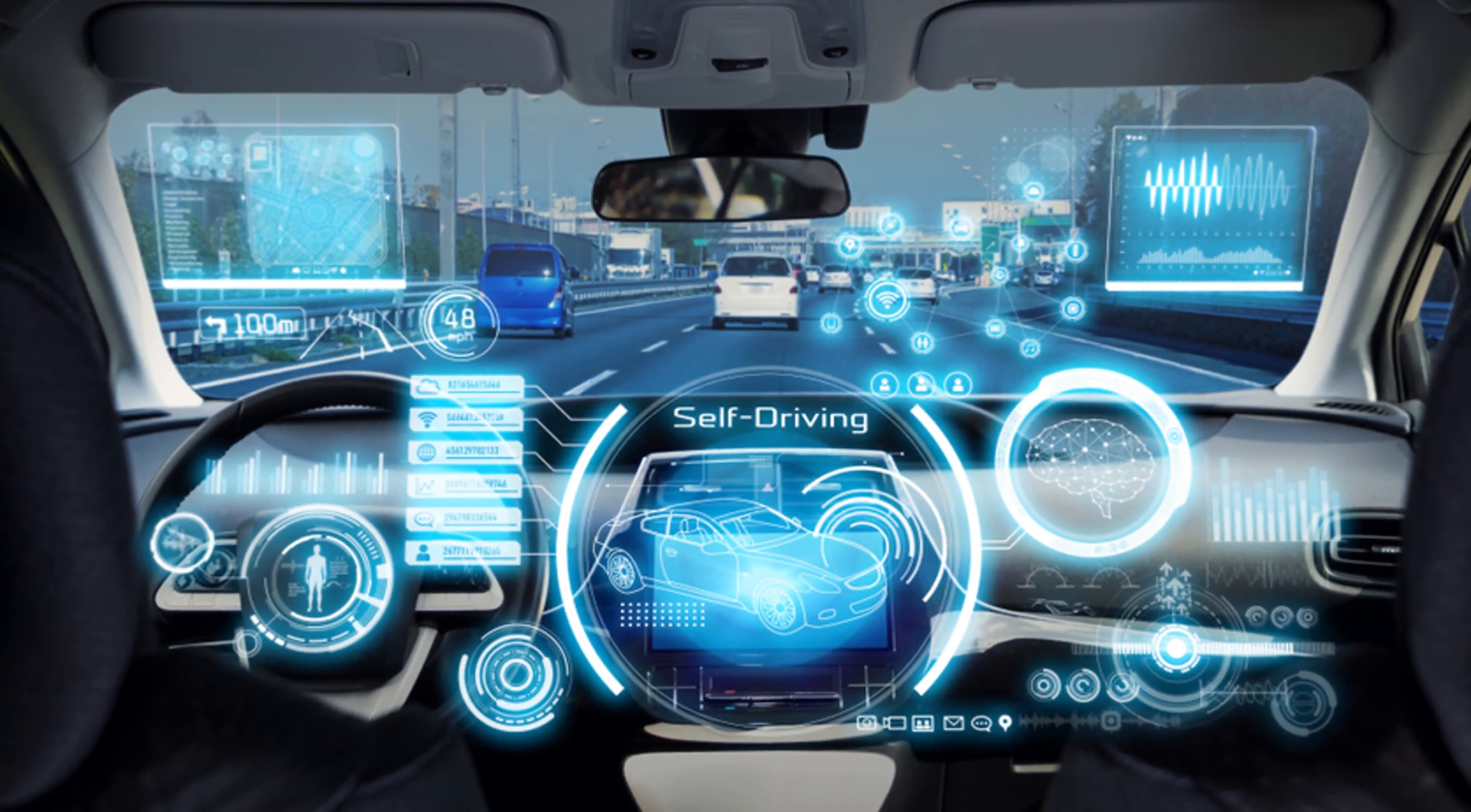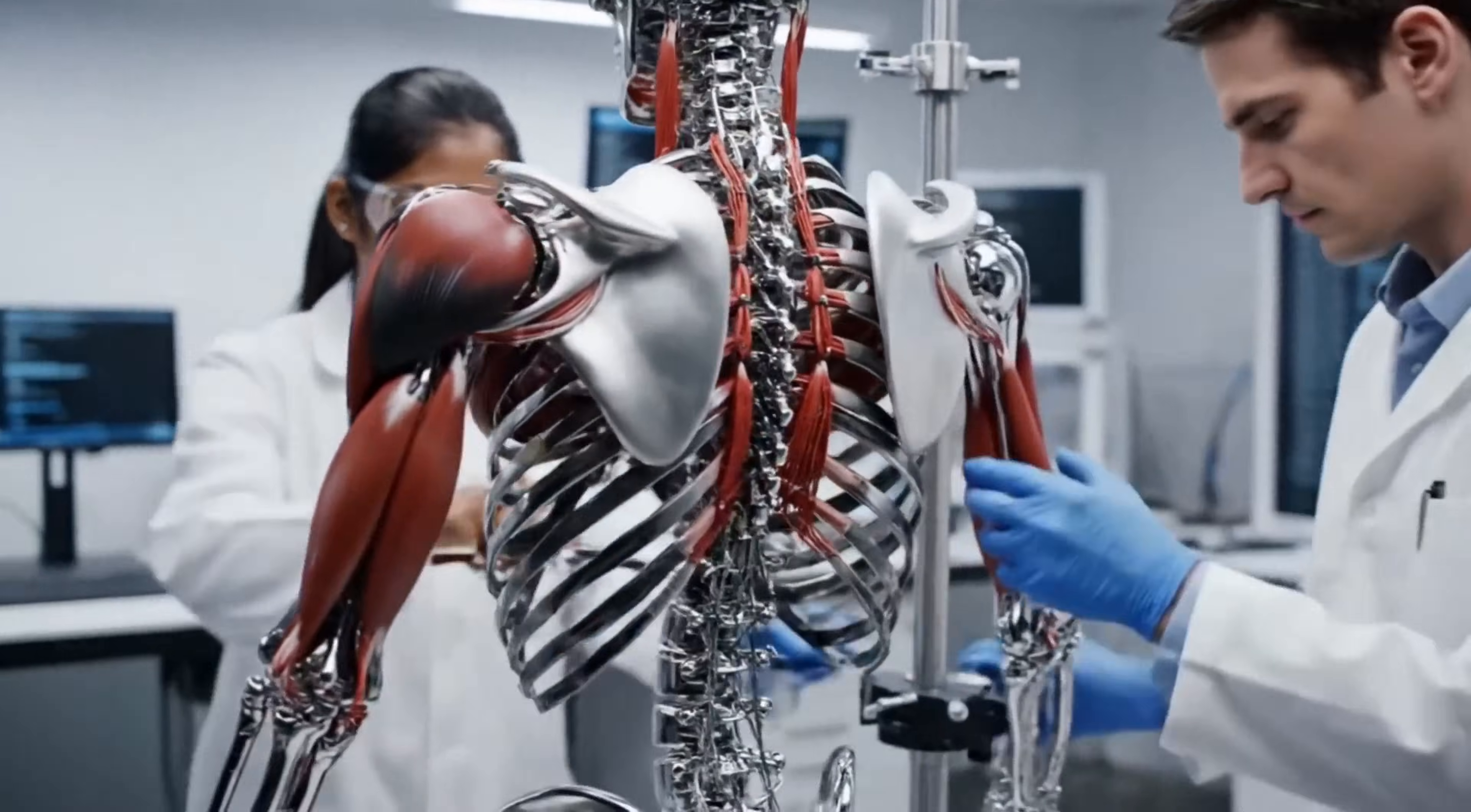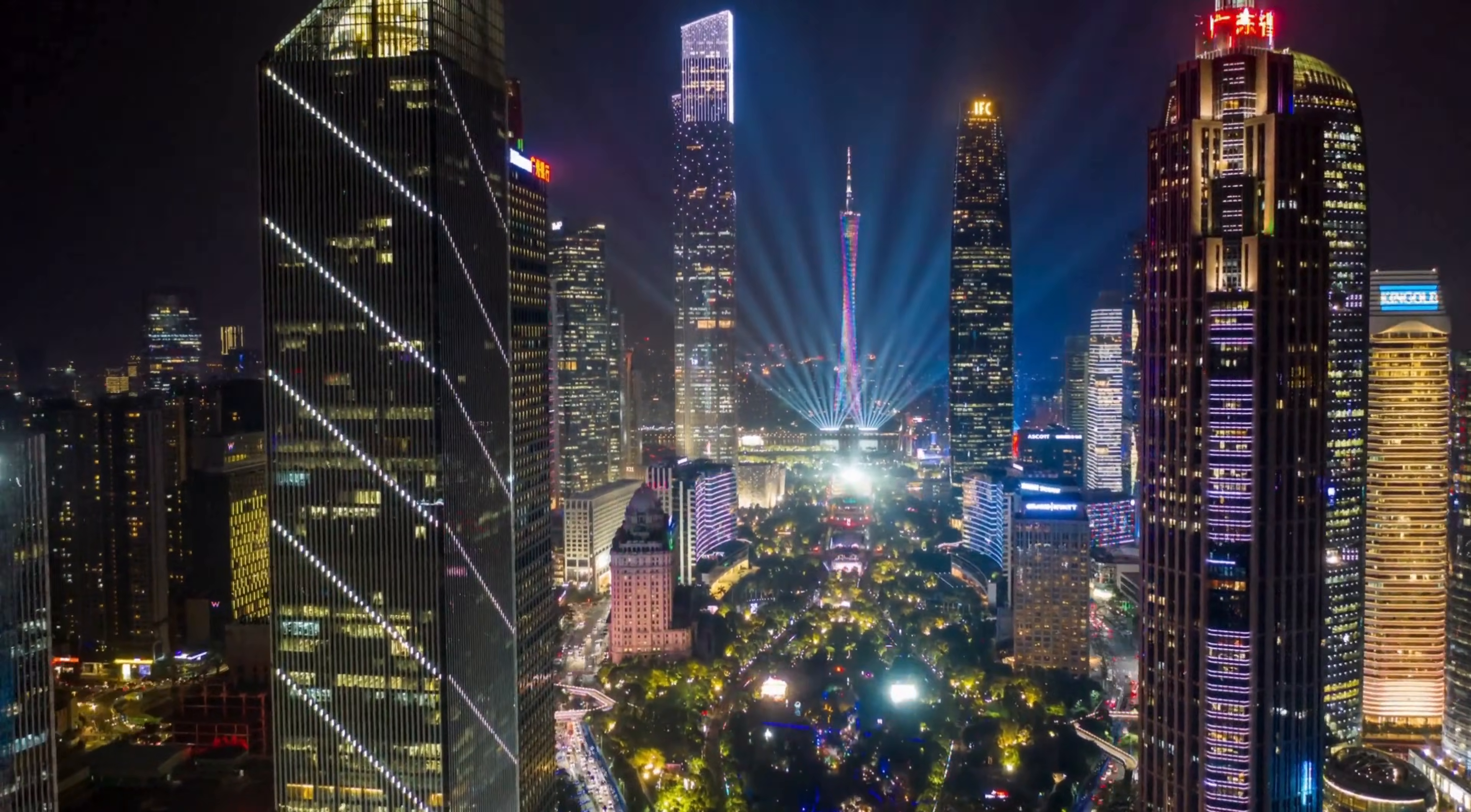Megacities running on renewable energy managed by artificial intelligence. Transportation networks where vehicles drive themselves. Communication systems where information moves at the speed of light through unbreakable encryption. Manufacturing facilities where robots build robots that build everything else. The race for the next hundred years isn't starting. It already happened. And the scoreboard reads 37 out of 44.